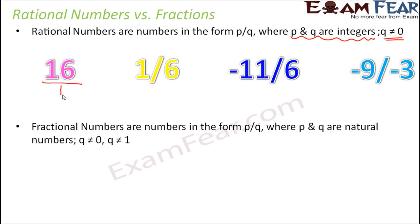Now when we talk about fractions or fractional numbers, these are also numbers in the form of p by q, but in this case p and q are natural numbers. So what are natural numbers? Numbers starting from 1 till infinity. So basically p and q in this case should be positive numbers alone.